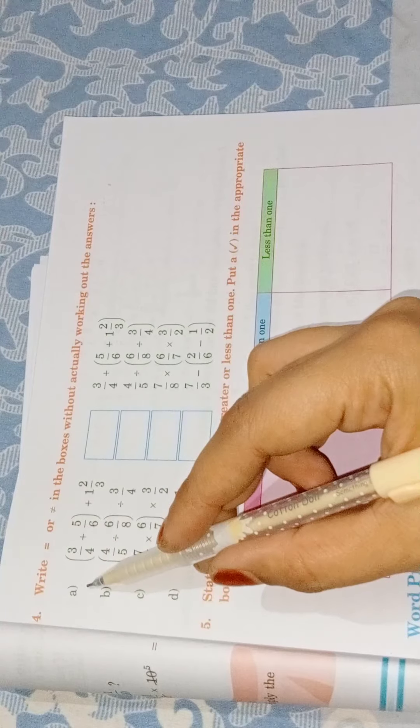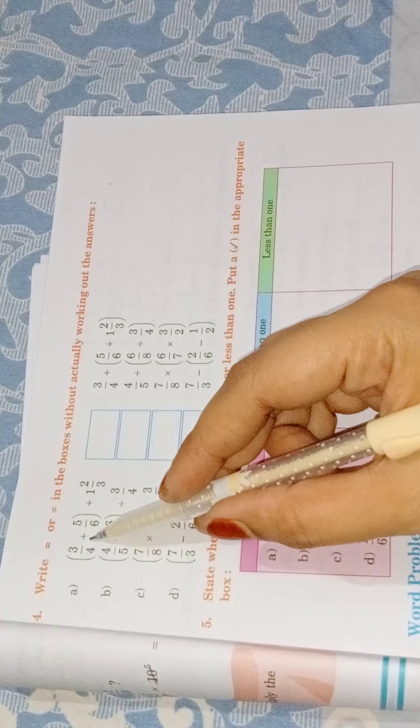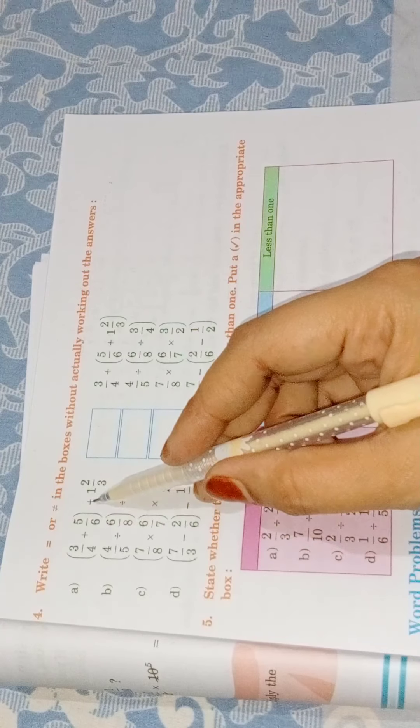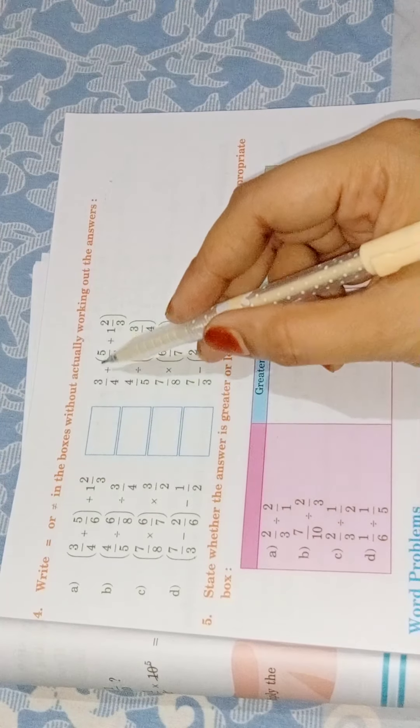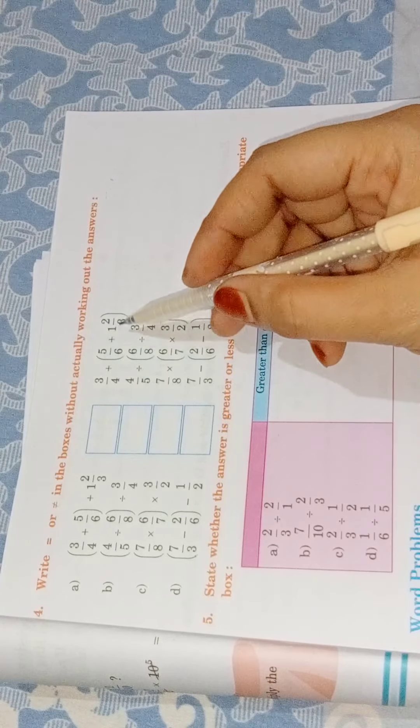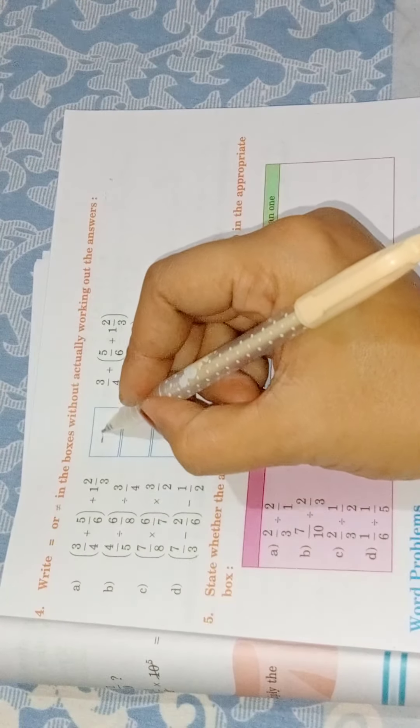First, you are going to see 3 by 4 plus 5 by 6 plus 1 ratio 2 by 3. And 3 by 4 is in the bracket and the position of the bracket is changed. This is an associative property. When we solve it, we get equal in the answer.